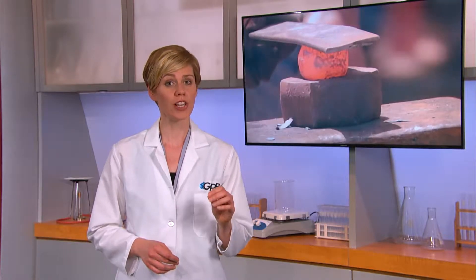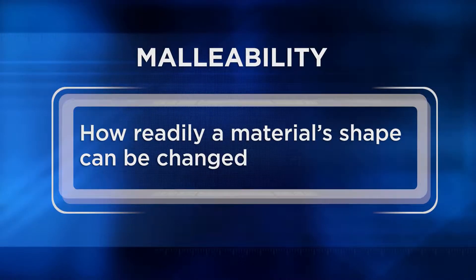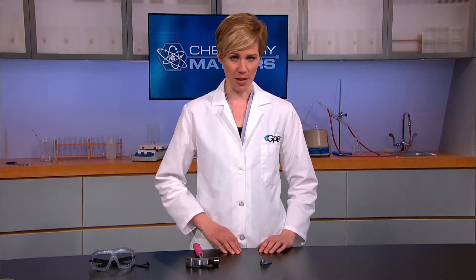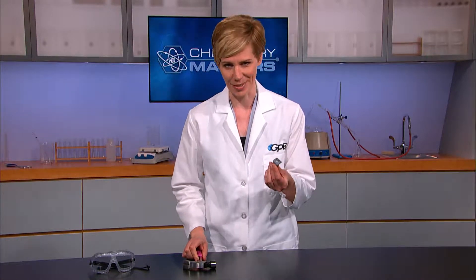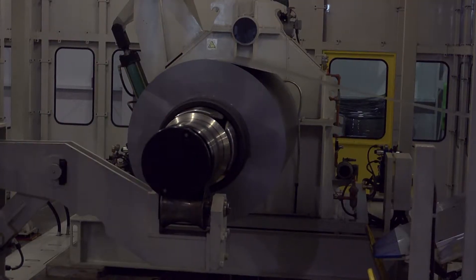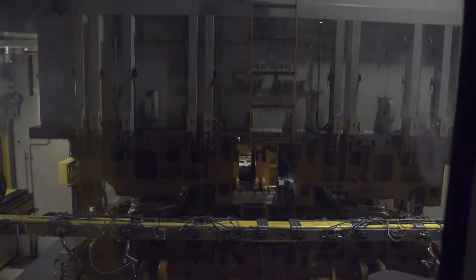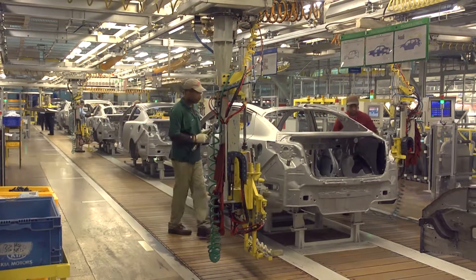Other materials such as tin, aluminum, and steel are not considered brittle due to their ability to absorb the energy from the hammer. When we look at metals, we look at how malleable these materials are. Malleability relates to how readily a material's shape can be changed. Take our fishing weight — when I hit it with this hammer, it doesn't shatter like glass. Instead, I'm able to change its shape. Most metals are malleable, but non-metals are not. Malleable materials can be hammered, rolled, or pressed into thin sheets. Steel is used in manufacturing car bodies because it's strong but still malleable.